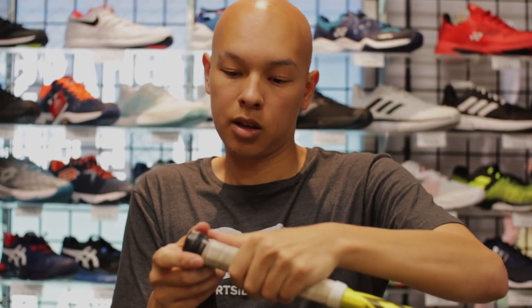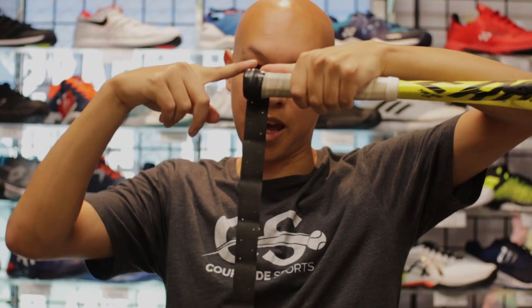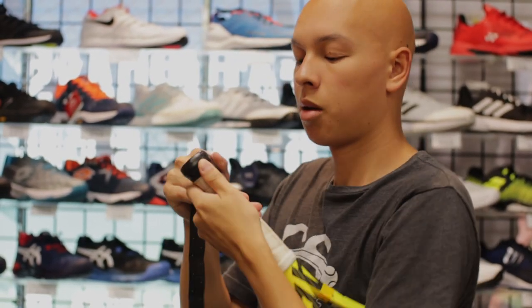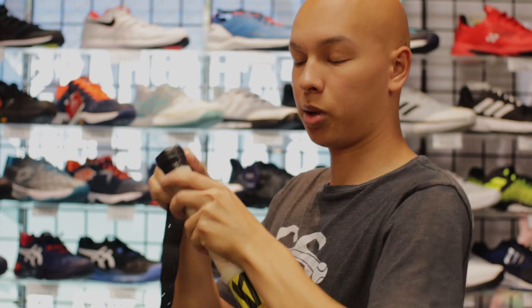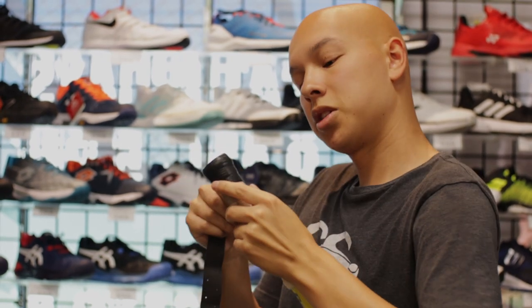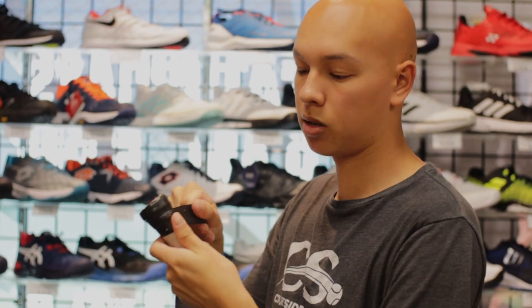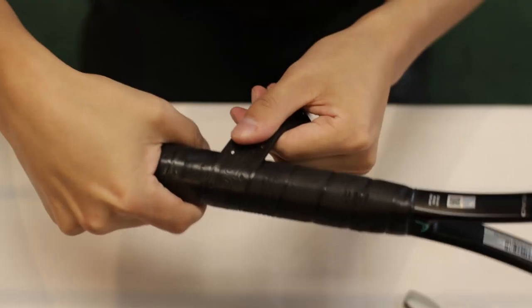At this point the grip starts being angled because of the flare of the butt cap, so you'll want to apply some pressure pulling the grip tape. Then once you get over the butt cap you'll get to a pretty flat zone and it gets quite easy.